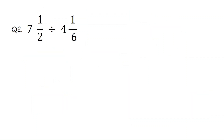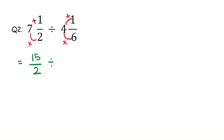Let's solve question number two. First, convert the mixed numbers to improper fractions. Multiply the whole number with the denominator and add that result to the numerator. The same way, 4 times 6 and add that result to the numerator. That is 7 times 2 is 14 plus 1 is 15 over 2, divided by 4 times 6 is 24 plus 1 is 25 over 6.